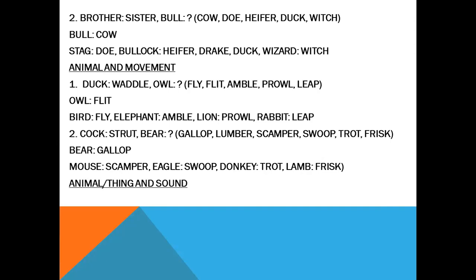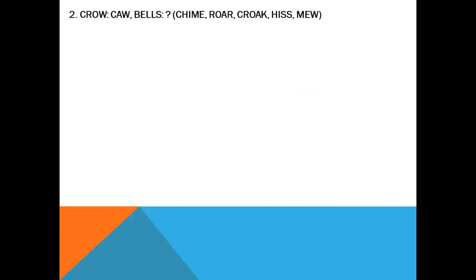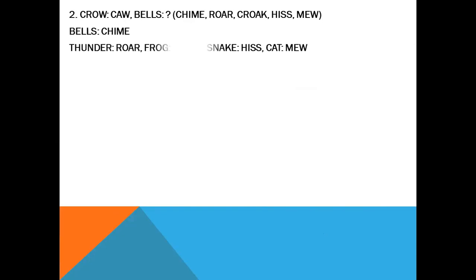Camel and its sound. Lion — roar. Camel — what? Options: bray, neigh, grunt, crow. Camel — grunt. Donkey — bray. Horse — neigh. Mice — squeak. Cock — crow. Bell — chime. Snake — hiss. Cat — mew.